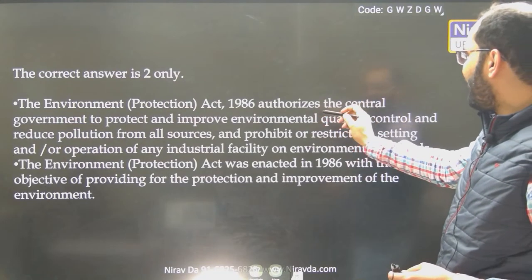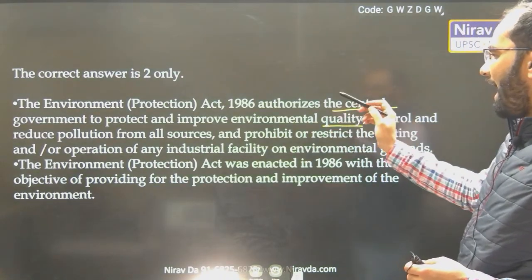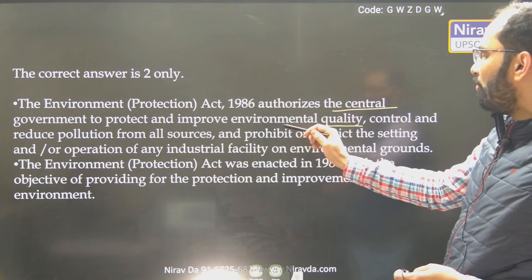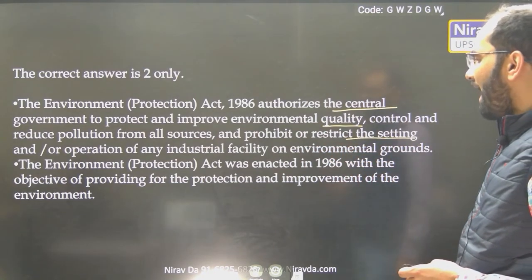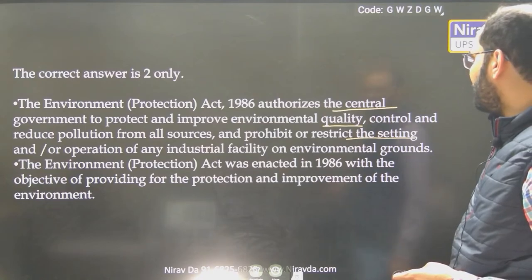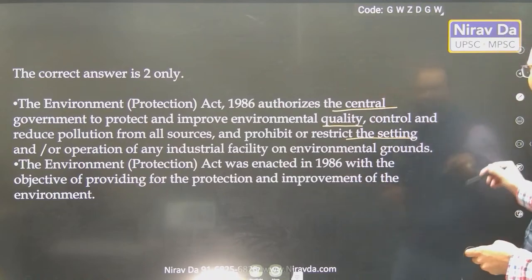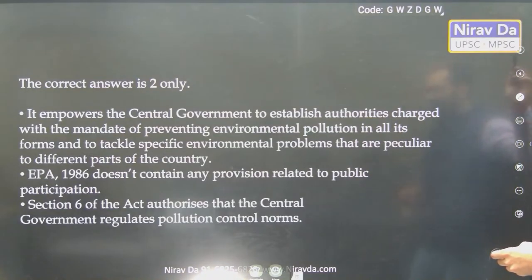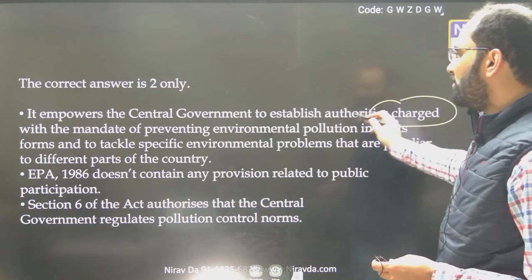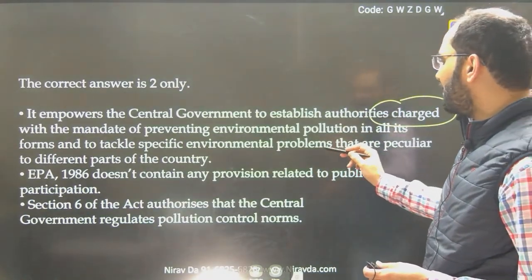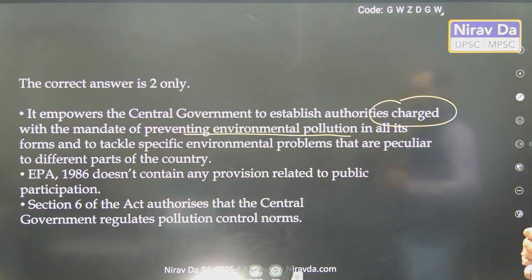The Environment Protection Act authorizes the central government to protect and improve environmental quality, control and reduce pollution from all sources, and prohibit or restrict the settling or operation of any industrial facility. The Environment Protection Act was enacted in 1986 with the objective of providing protection and improvement of the environment. It empowers the central government to establish authorities to prevent environmental pollution.